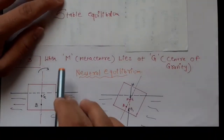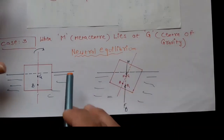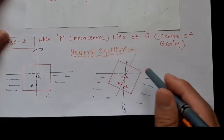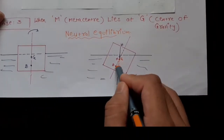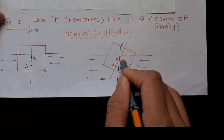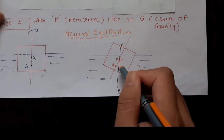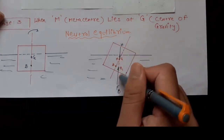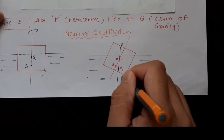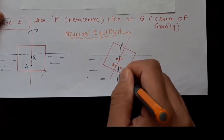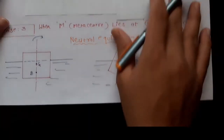Case 3: when metacenter M lies at G. When we tilt the body, the center of gravity and metacenter are at the same point. The buoyant force acting upward and the weight acting downward act at the same point, so they do not produce a couple — there is no perpendicular distance. The body will remain at the tilted position. This is called neutral equilibrium.